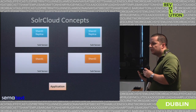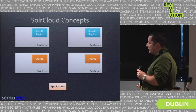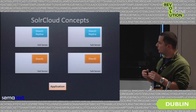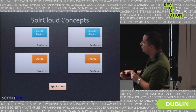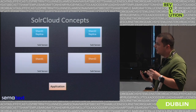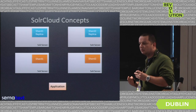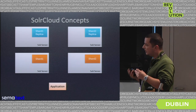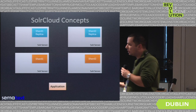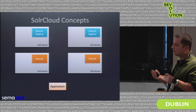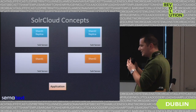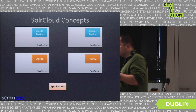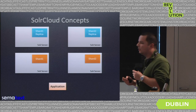Each shard can be either a leader or a replica. When your application sends data to the Solr cloud, Solr automatically routes the data to one of the leader shards. By default, it takes the ID of the document, calculates a hash based on that ID, and then chooses which shard it goes to. After that, the document is sent to its replicas so that you can have multiple copies of the same document in order to serve more queries and to have more availability and not fail when a single shard fails.